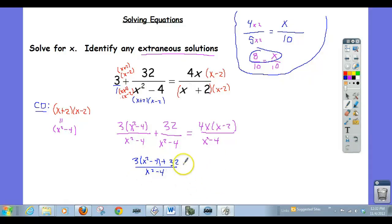And that's equal to 4x times x minus 2 over x squared minus 4. And this is where we want to be, because look, we've got a quantity over x squared minus 4 equal to another quantity over x squared minus 4. We're in this situation.